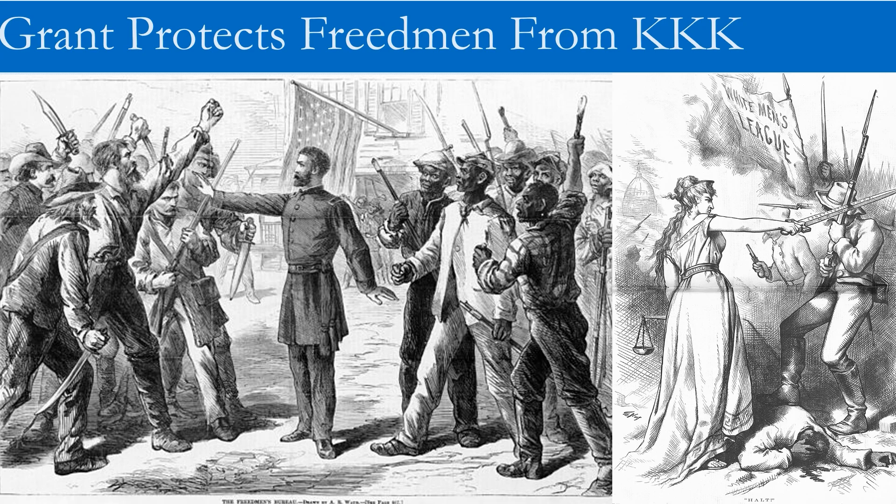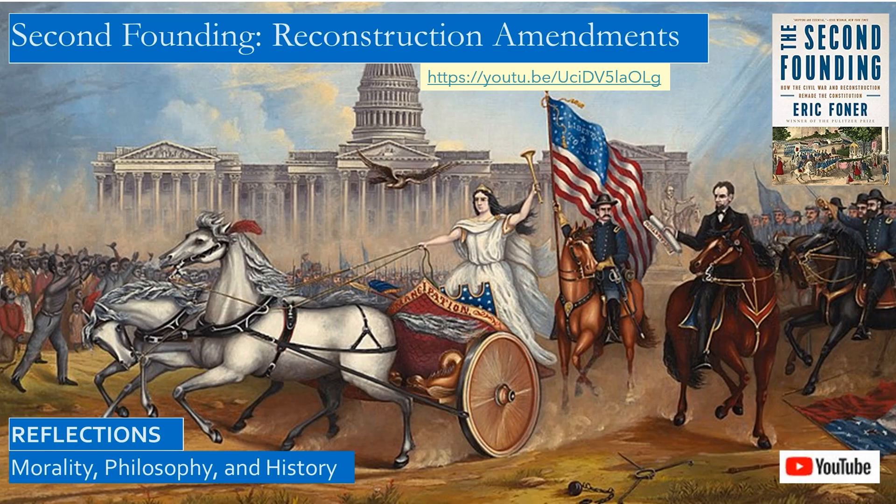Grant was best known for his efforts to protect freedmen from the terrorism of the KKK and other white supremacists. In early 1870, Virginia, Mississippi, and Texas were the last Confederate states readmitted into the Union. The Confederate states were compelled to adopt the Civil War Amendments — the 13th Amendment abolishing slavery, the 14th Amendment extending citizenship to all natural-born and naturalized citizens and guaranteeing due process under the law, and the 15th Amendment granting free slaves the right to vote. The new Reconstruction government of Mississippi elected their first black senator, Hiram Revels, in supreme irony, whose Senate seat was once held by Jefferson Davis, the former president of the Confederacy.